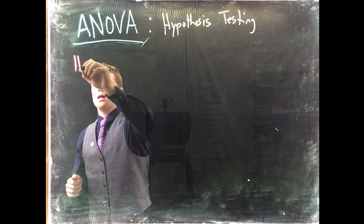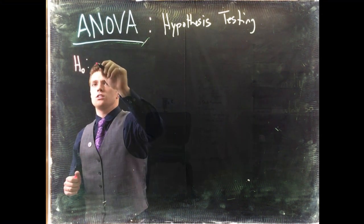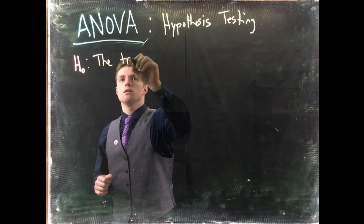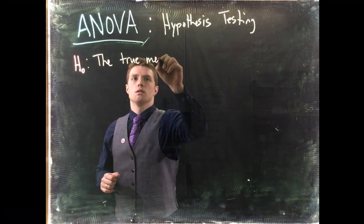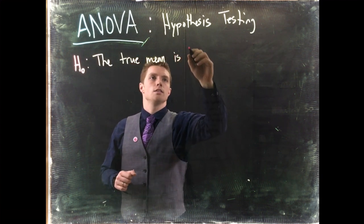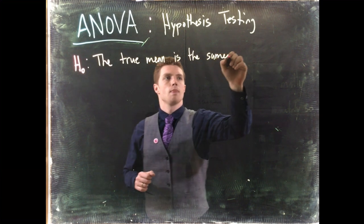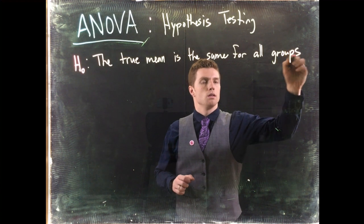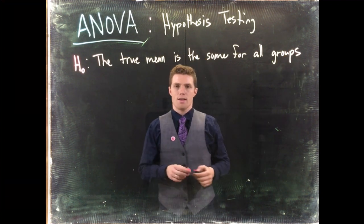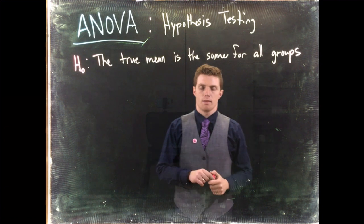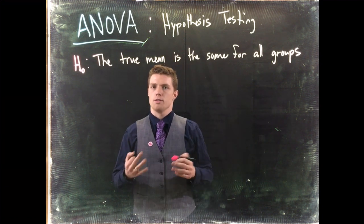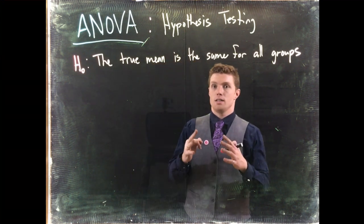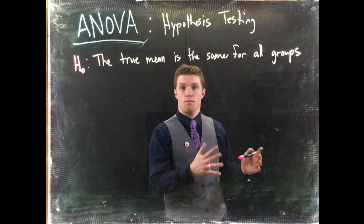The null hypothesis is such that the true mean is the same for all groups. So if we're trying to measure the fat content of three different burgers from three different chains, we could say that the true mean of fat content for all of these burgers is the same for all the groups.